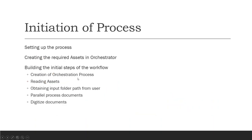We'll be using the validation station or Action Center for validation. Post-processing will focus on training classifiers, generating training data, and exporting to Excel. In this first video of the series, we'll be focusing on setting up the process — setting up assets in Orchestrator, creating the workflow as an orchestration process, reading assets, obtaining the input folder path, and parallel processing. Digitization, classification, and data extraction will be covered in subsequent videos.